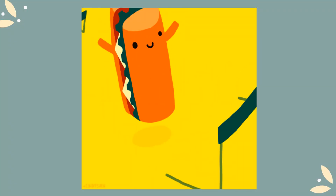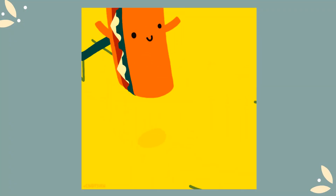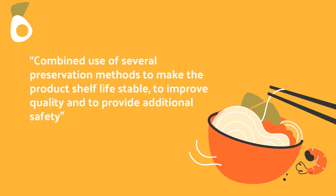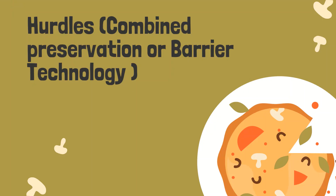Basically, what is Hurdle Technology? It is the combined use of several preservation methods to make the product shelf life stable and to improve the quality of the food product and add safety to the product. Hurdle Technology is also called as combined preservation or barrier technology.